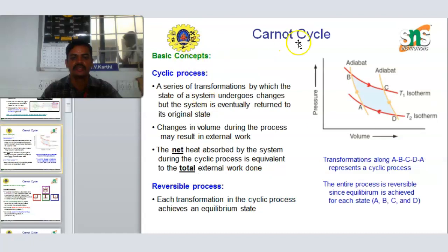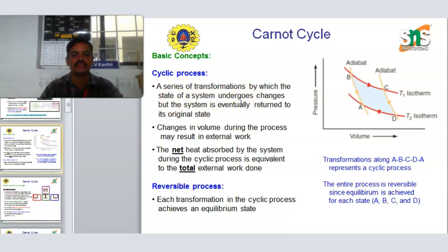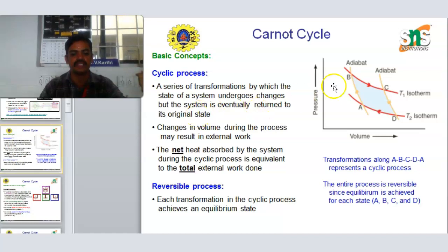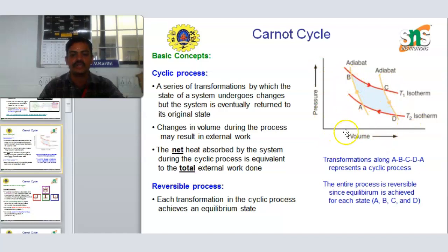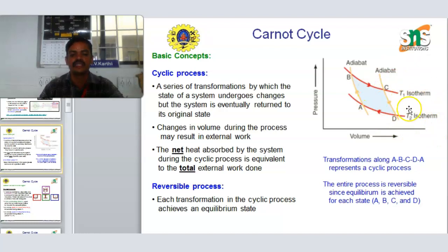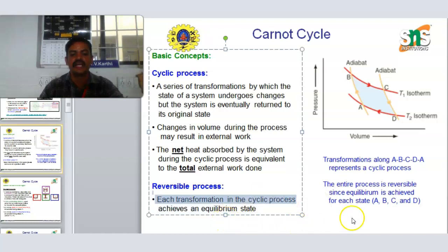The basic concept of a cyclic process: a series of transformations by which the state of a system undergoes change, but the system is eventually returned to its original state. Change in volume during the process may result in external work. The net heat absorbed by the system during the cyclic process is equivalent to the total external work done. In a reversible process, each transformation of the cyclic process achieves an equilibrium state.